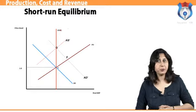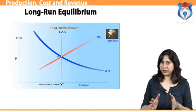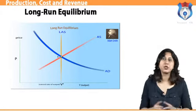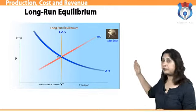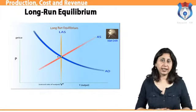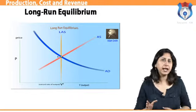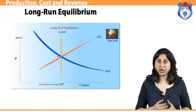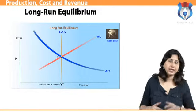Long run equilibrium can also be determined. The equilibrium in the long run is shown by the intersection of the AD curve, the SAS curve, and the long run aggregate supply (LAS) curve. Since LAS represents potential output, a shift in the AD curve will only result in a change in price level — a shift to the right increases price level and a shift to the left decreases price level.